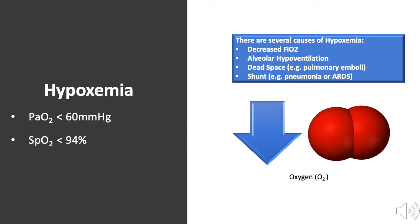Hypoxemia is defined as a partial pressure of arterial oxygen less than 60 mmHg, or an SpO2 or oxygen saturation less than 94% by pulse oximetry. Although an SpO2 less than 94% defines hypoxemia, oxygen therapies and mechanical ventilation may not be indicated until more severe hypoxemia occurs or respiratory failure becomes evident.